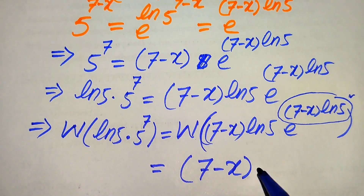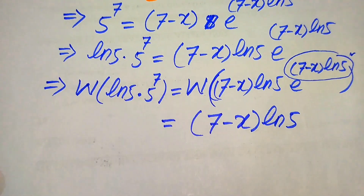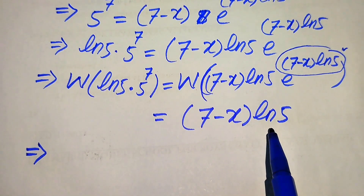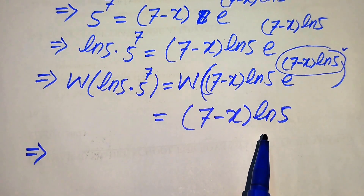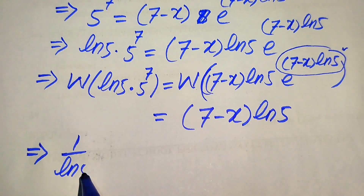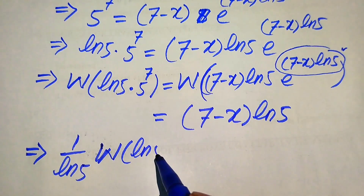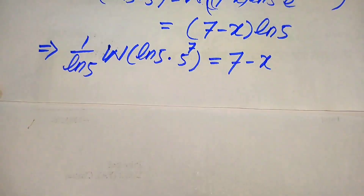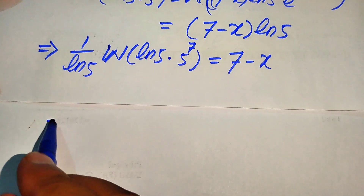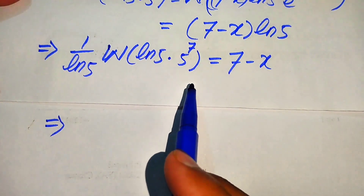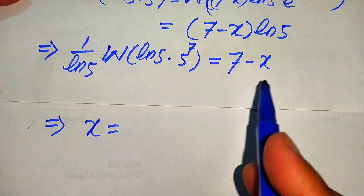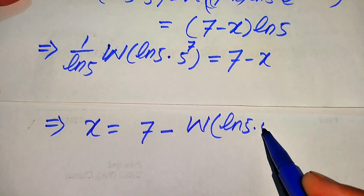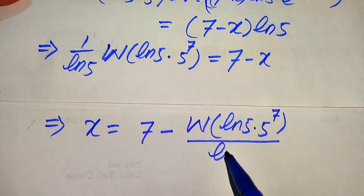Because we solve this problem for x, we move all other terms to the left hand side. Log 5 is multiplied on the right side, so when we move it to the left it becomes 1 over log 5 times W of log 5 times 5 to the power of 7, divided by log 7, equals 7 minus x. We then move minus x to the left and all other terms to the right, giving x equals 7 minus W of log 5 times 5 to the power of 7 divided by log 5.